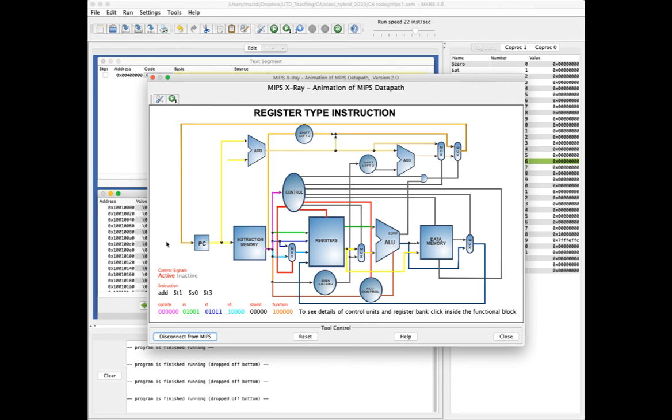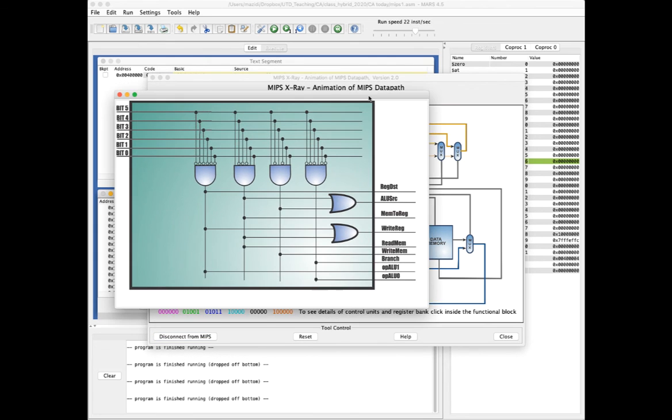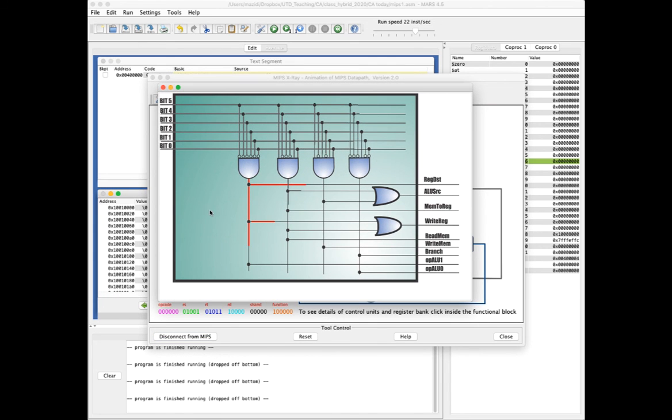If we right-click on the control unit, it pops up the circuitry that could be used to implement the control unit of combinational logic.